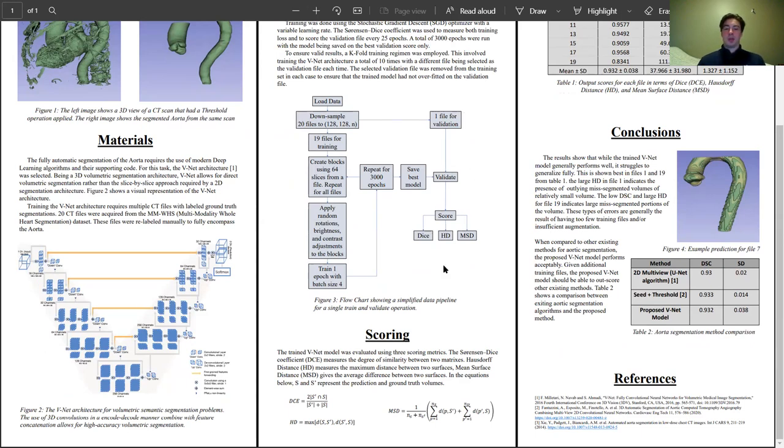The scoring is done using a combination of the Sørensen dice coefficient, the Hausdorff distance, and the mean surface distance. The Sørensen dice coefficient is simply a measure of the degree of similarity between the two volumes, so the labeled mask file and the prediction.